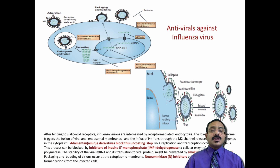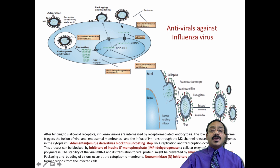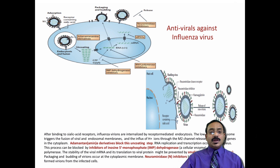This figure shows you the full replication cycle, right from the absorption of the virus to its budding and release. You can see all the sequences from absorption through to budding out. The initial absorption is by binding of the virus with sialic acid receptors present in the eukaryotic cell. The influenza virion is internalized from the external surface inside the cell through receptor-mediated endocytosis.